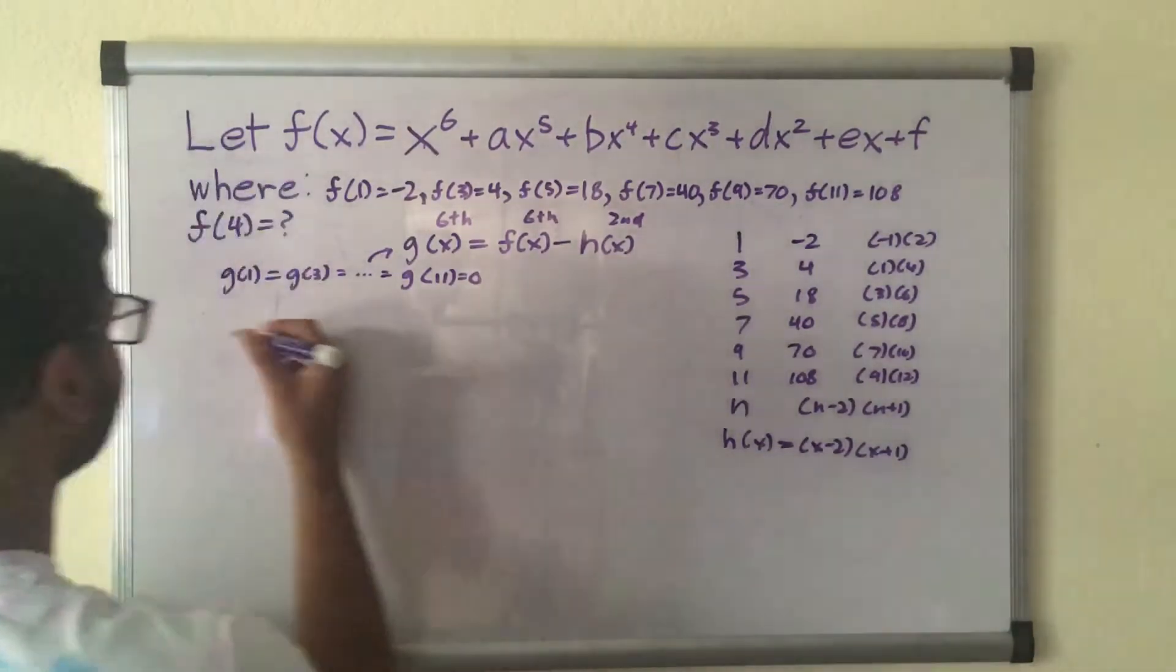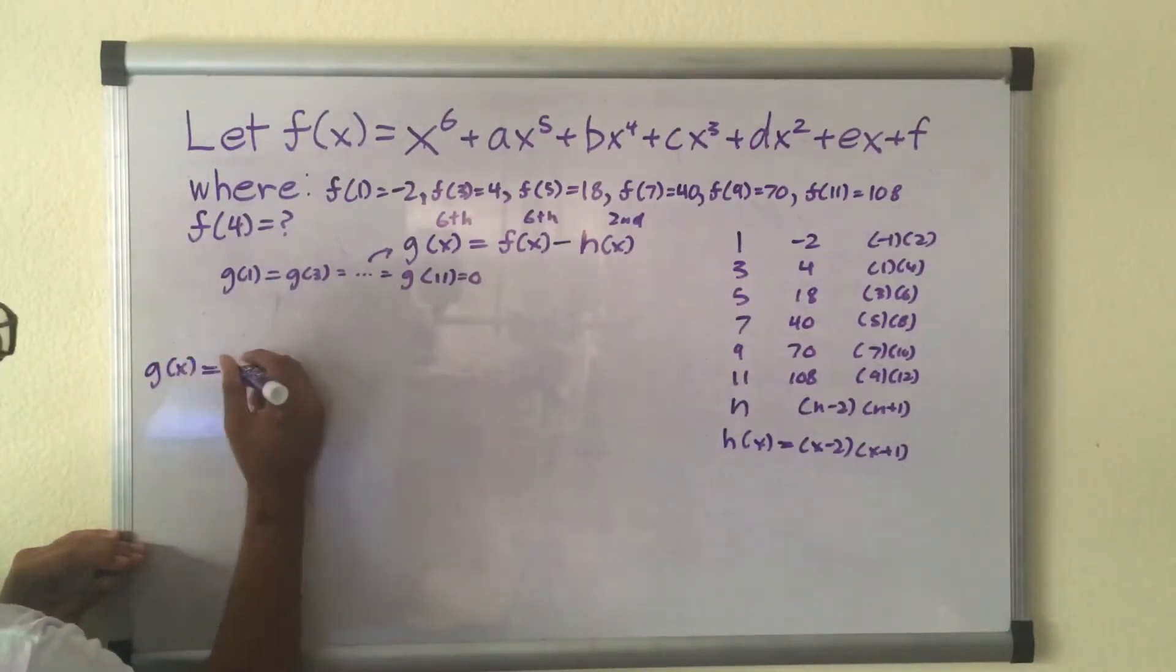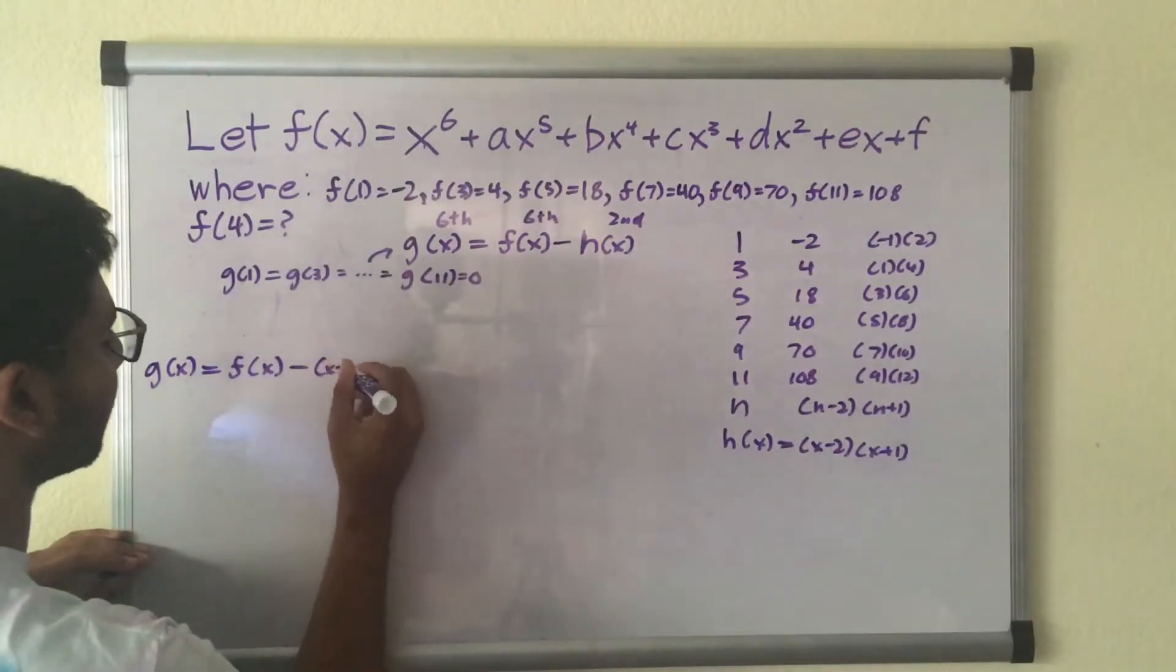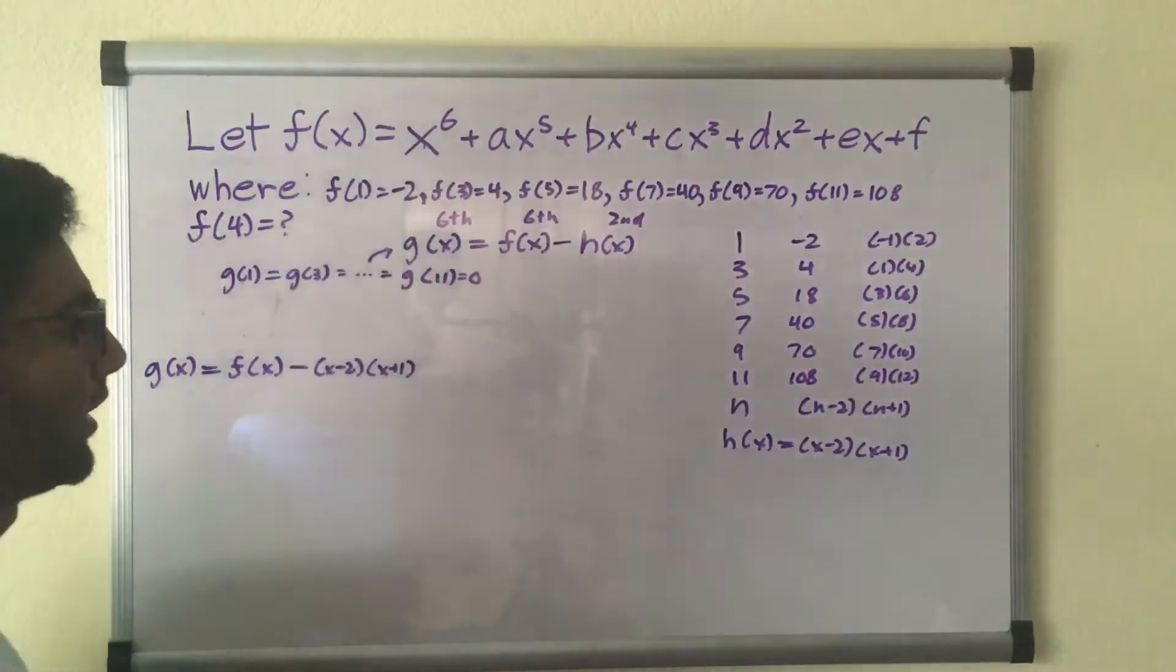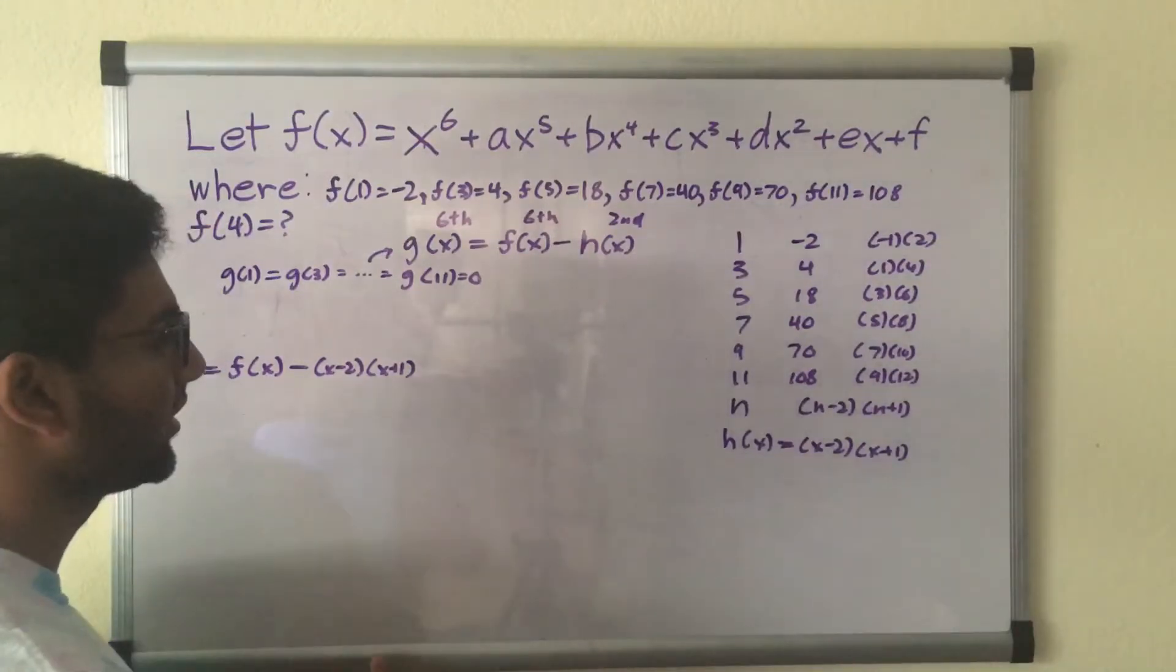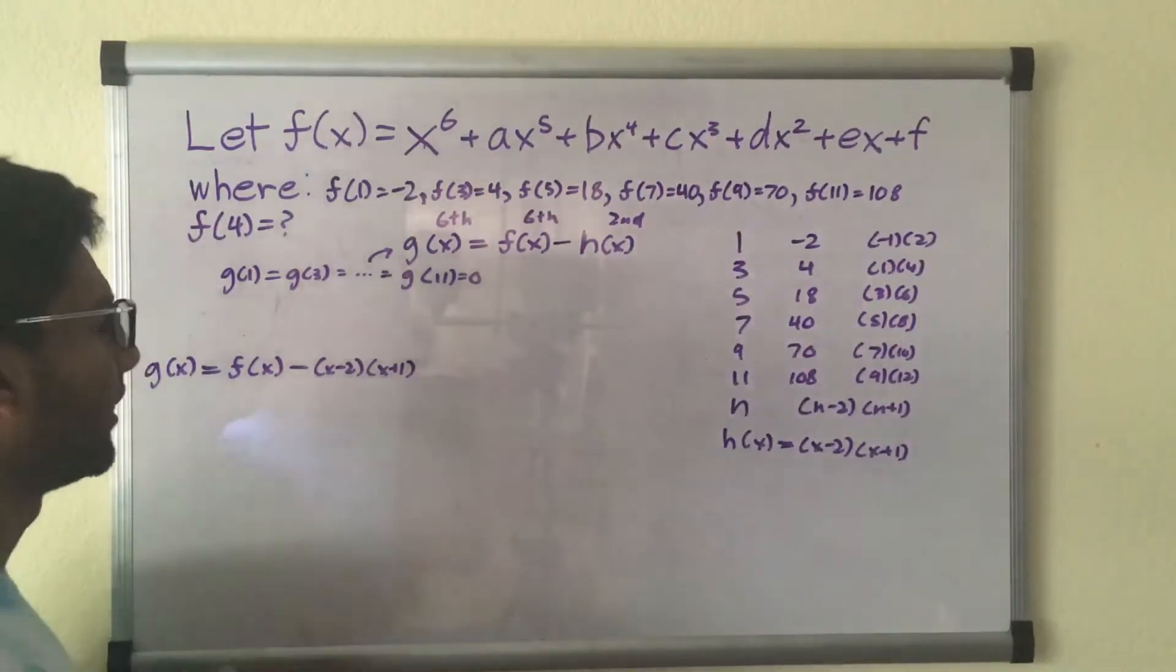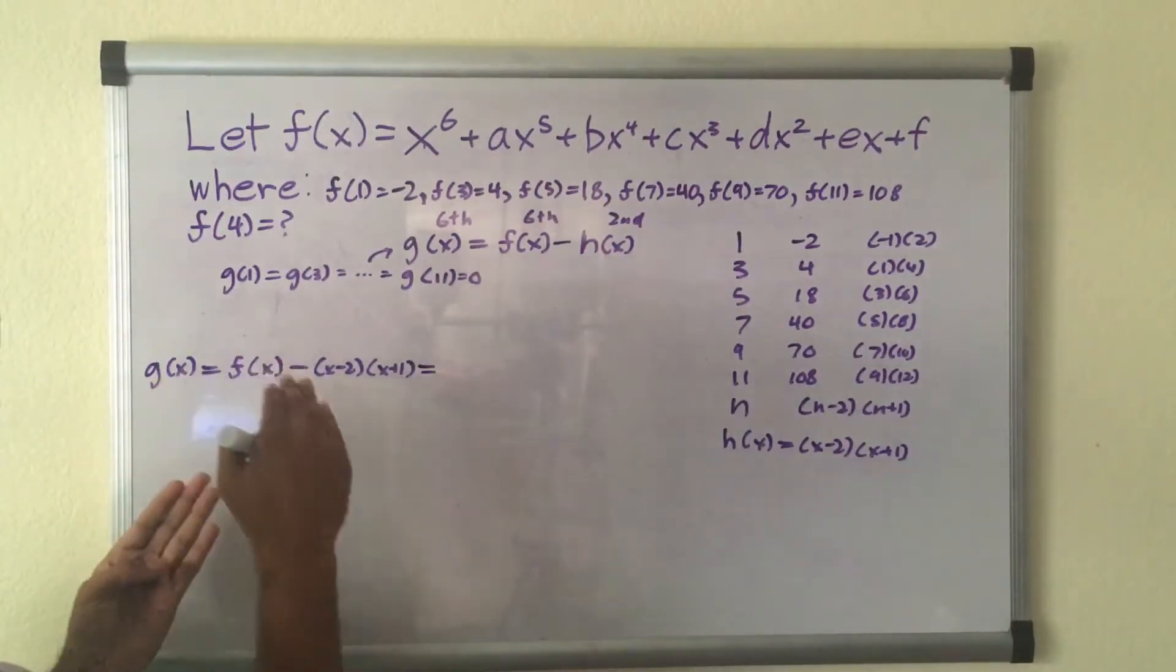With that in mind, let's go ahead. We will have g of x is equal to f of x minus x minus 2 times x plus 1. Now notice something. Now that we've subtracted this x minus 2 times x plus 1, this is technically equivalent to a factored form because if we plug the roots in, we'll get 0. Knowing that, we can set this equal to the factored form of g of x.